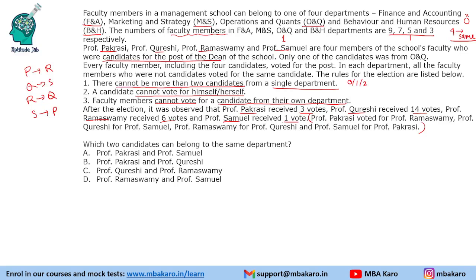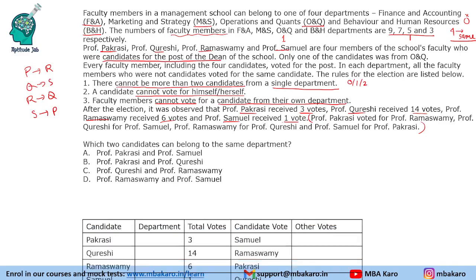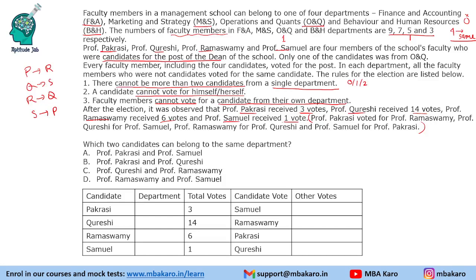Now based on this information, we need to find out who received votes from which department and how many candidates were from each department. We'll make a table for the four candidates with their vote counts: P=3, Q=14, R=6, S=1. There is one candidate vote each, so the non-candidate votes are 2, 13, 5, and 0 respectively for P, Q, R, S.